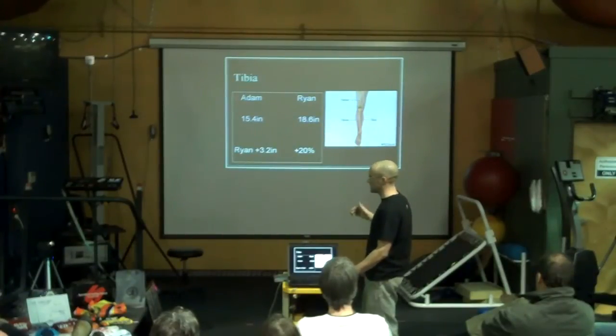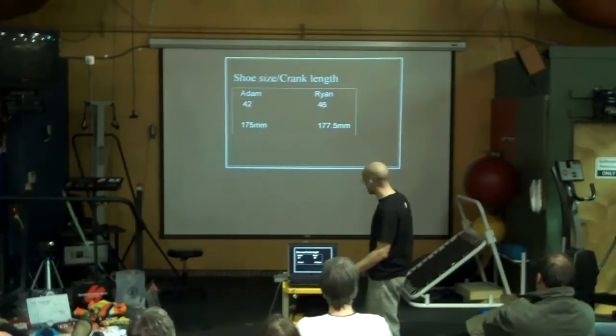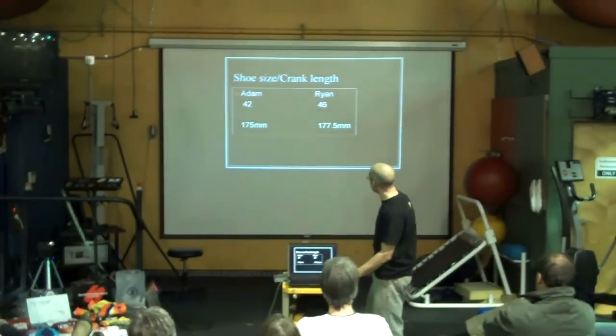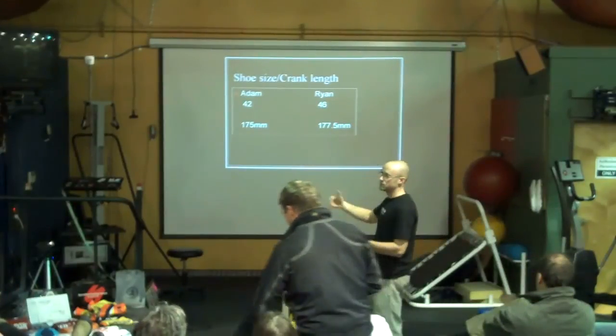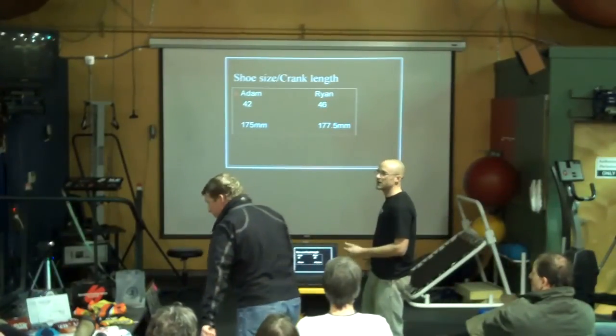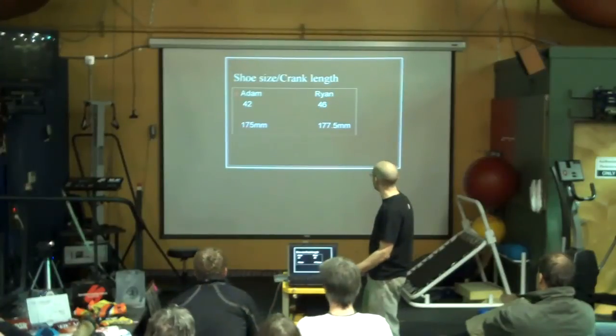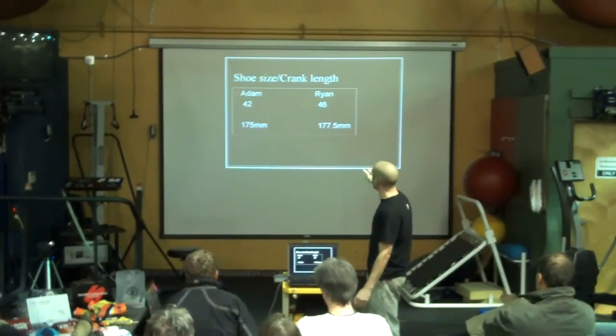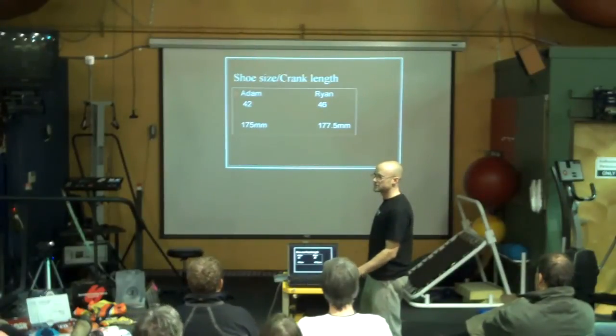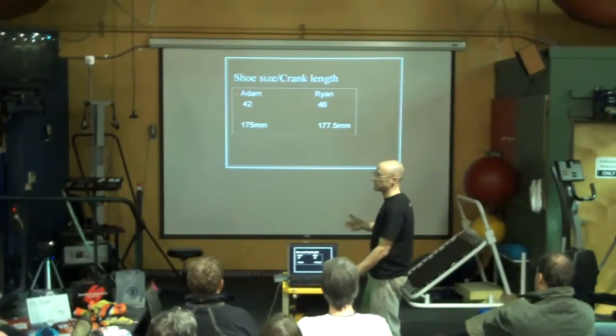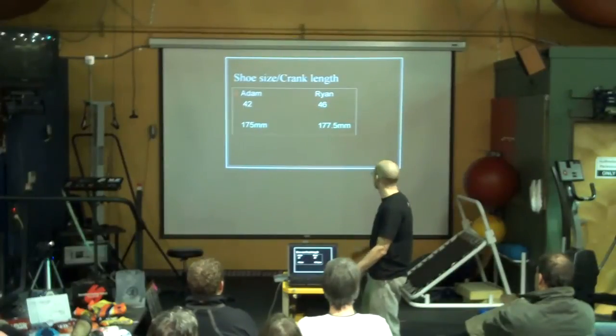You see the bikes next to each other, you can see where this leg length really shows itself. A little bit bigger foot on Ryan, that's even more length he's going to add to his total kinetic chain of his legs that's attached to the pedal, and Ryan runs long cranks, 177 millimeter cranks, not many people run that long, but that's tiny compared to, it's like me running 165 millimeter cranks, truly. We'll talk about that later as well.